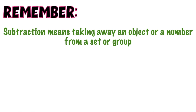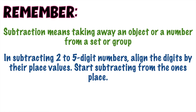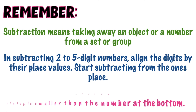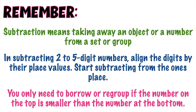Always remember, children: subtraction means taking away an object or a number from a set or group. In subtracting 2 to 5-digit numbers, align the digits by their place values, start subtracting from the ones place, and lastly, you only need to borrow or regroup if the number on top is smaller than the number at the bottom.